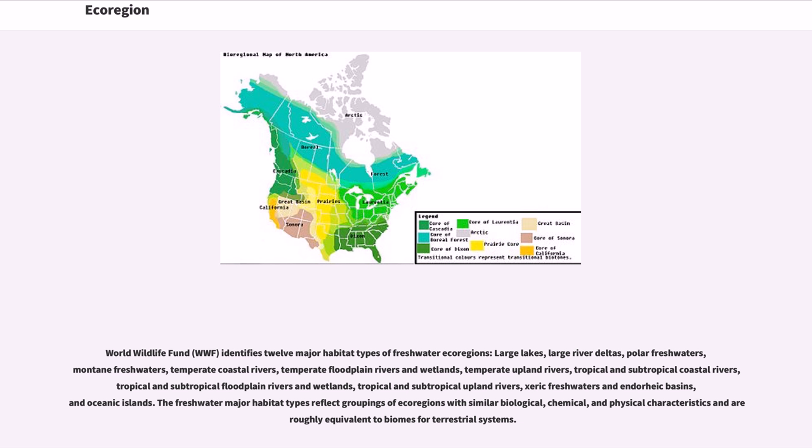The freshwater major habitat types reflect groupings of ecoregions with similar biological, chemical, and physical characteristics and are roughly equivalent to biomes for terrestrial ecosystems.